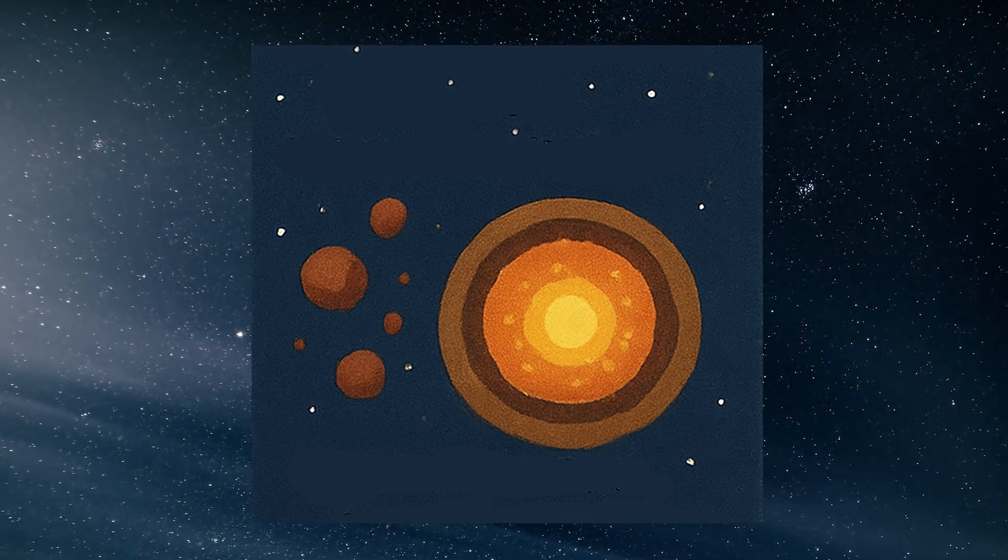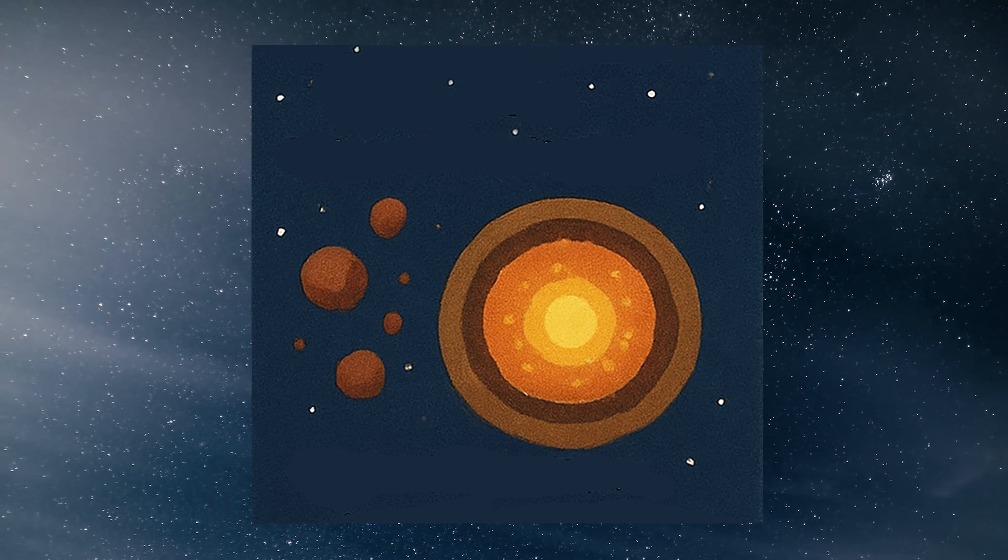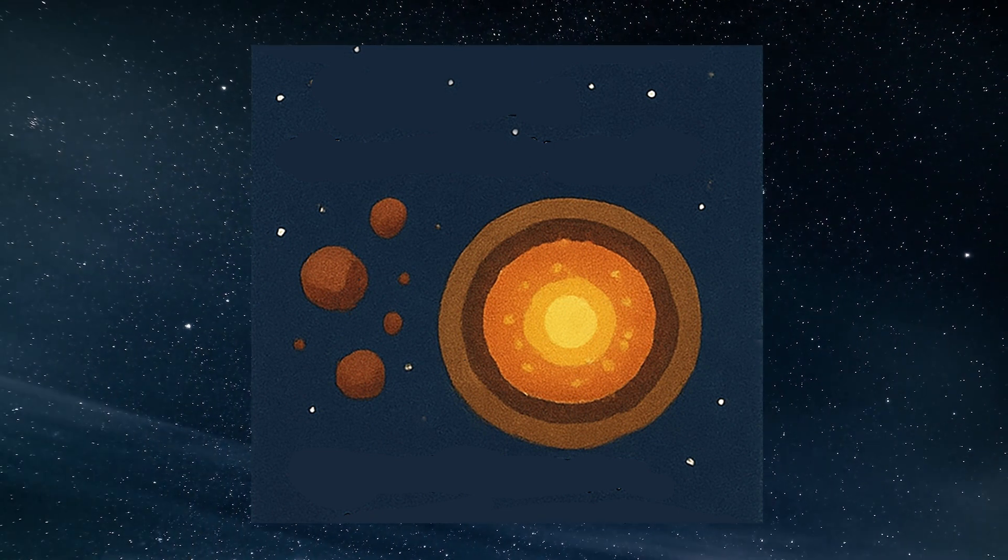Earth got layers. The heavy stuff sank to the middle—that's the core. And the lighter stuff floated to the top—that's the crust. Like layers of a cake.